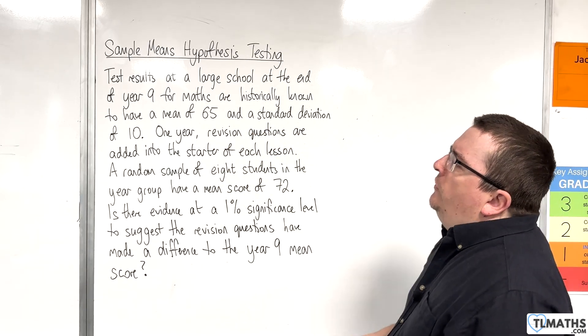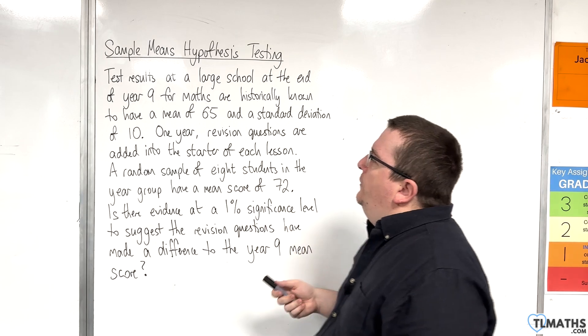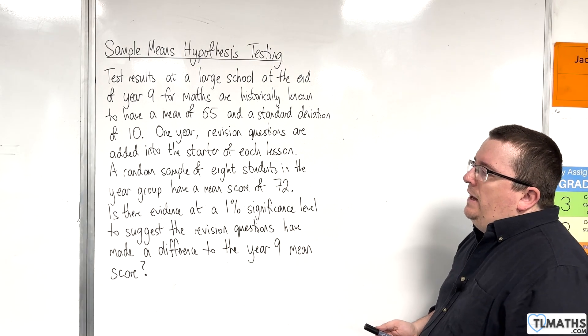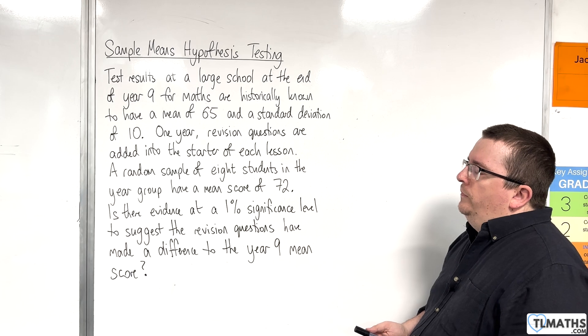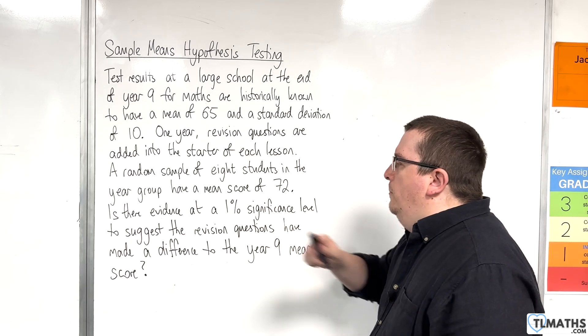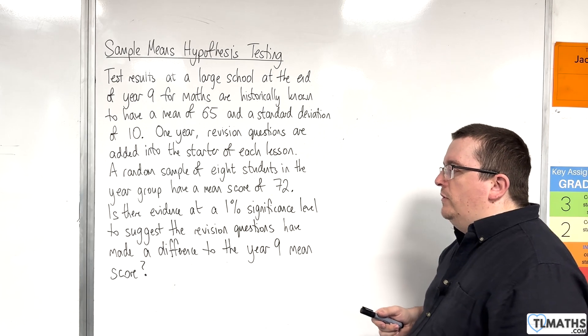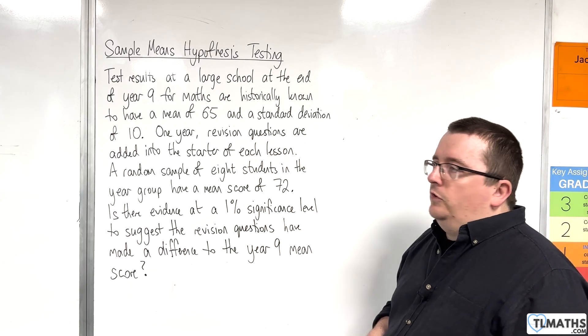One year, revision questions are added into the starter of each lesson. A random sample of 8 students in the year group have a mean score of 72. Is there evidence at a 1% significance level to suggest the revision questions have made a difference to the Year 9 mean score?